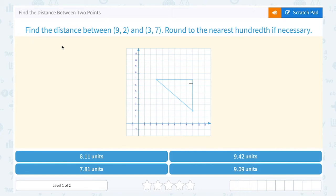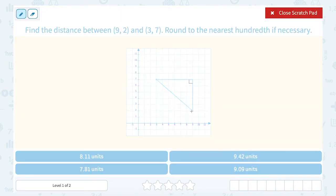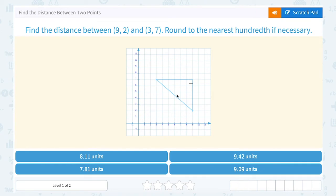We're going to take a look at how to find the distance between two points. This question asks us to find the distance between (9, 2), which will be our point right here, and (3, 7), which we can see they also put on the graph for us. Round to the nearest hundredth if necessary. So the shortest distance, or when they say find the distance, they mean the straight line between those two points.